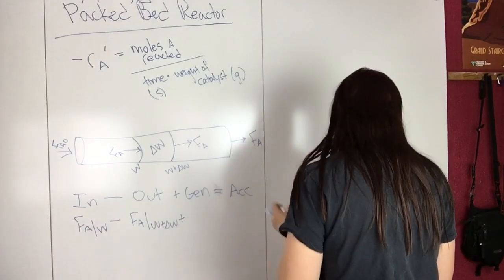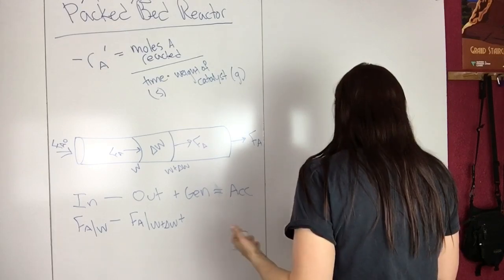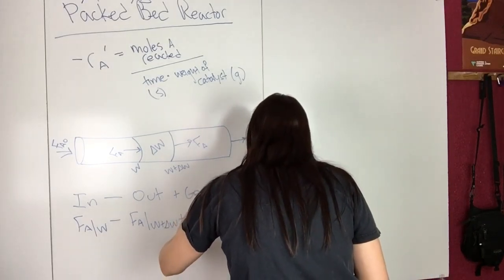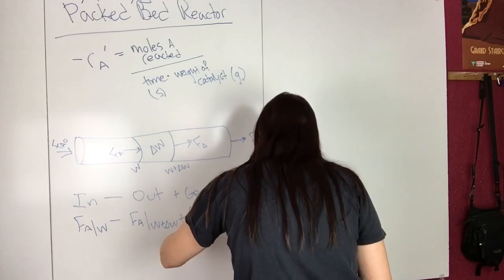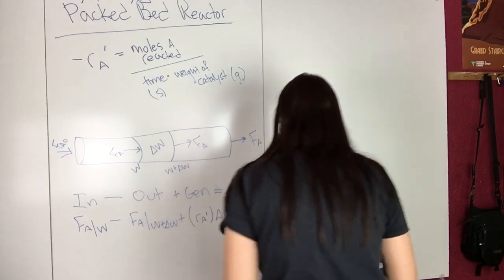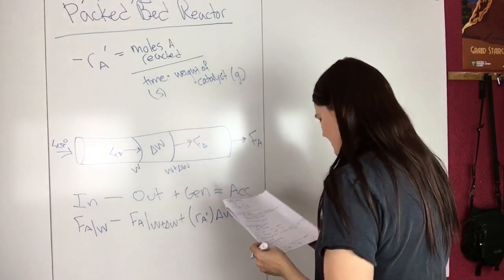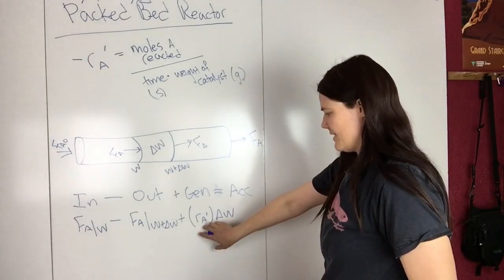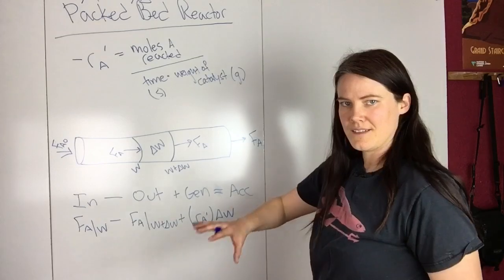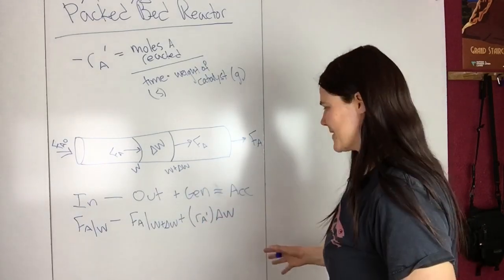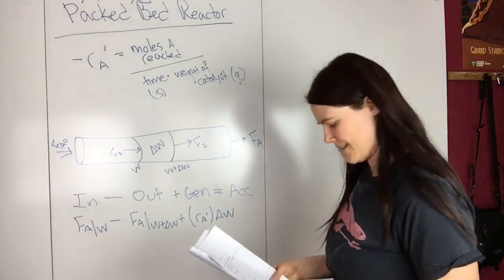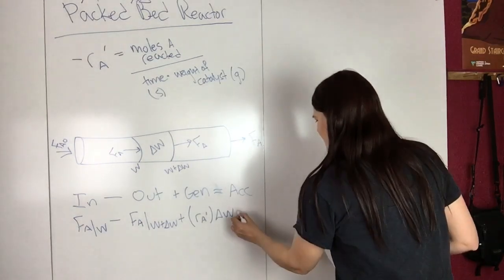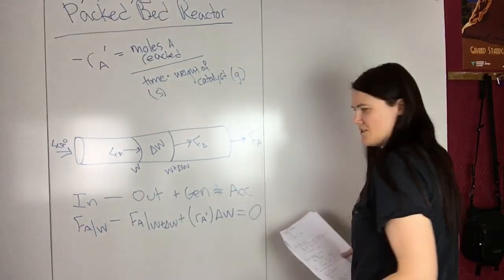And then we have this generation term, so R_A prime delta W, and once again, we're assuming that this rate doesn't change with position in order to write it like this. So just so you know, that's an assumption we're making here. And then we know that there's no accumulation, so that equals zero.